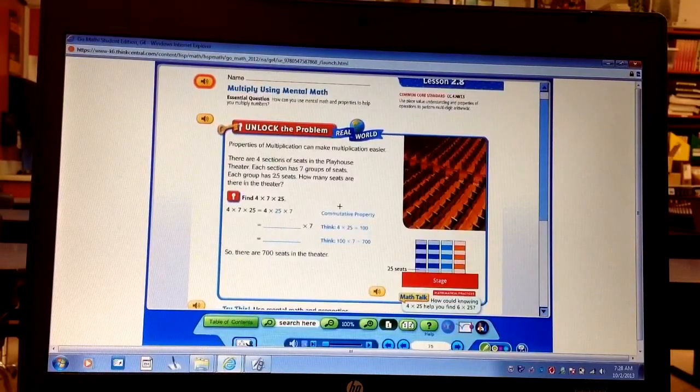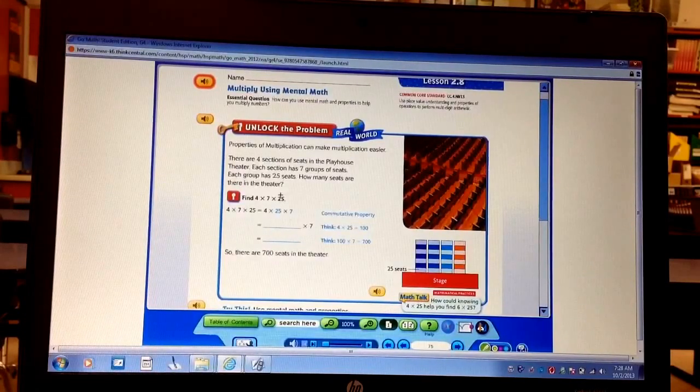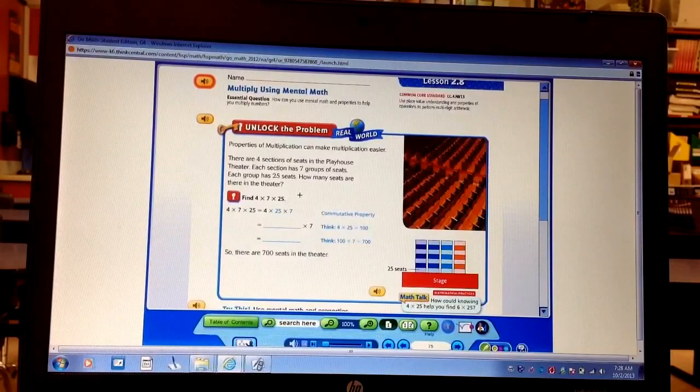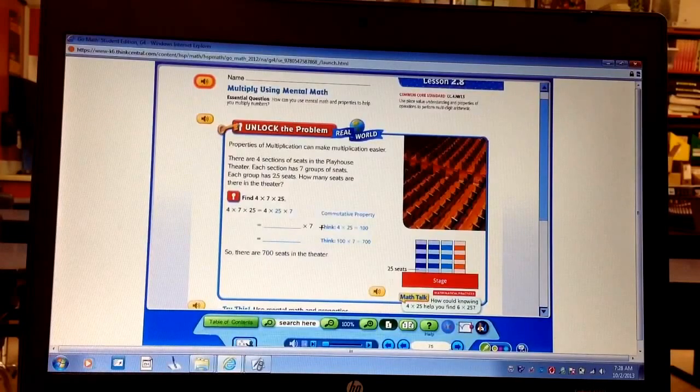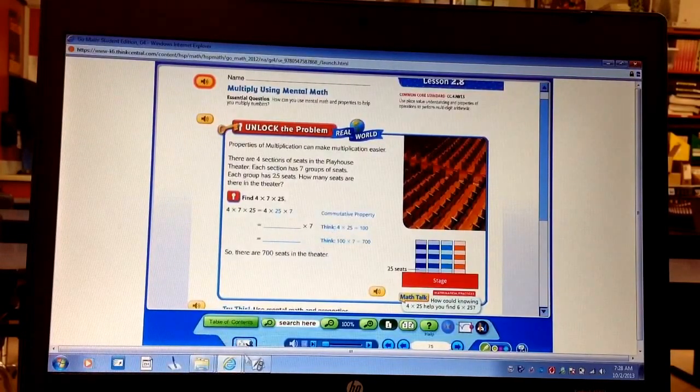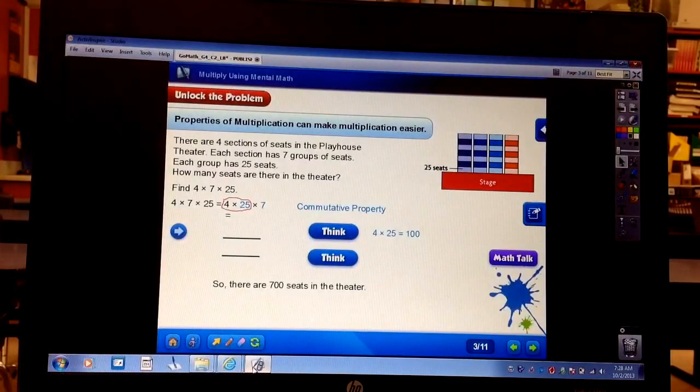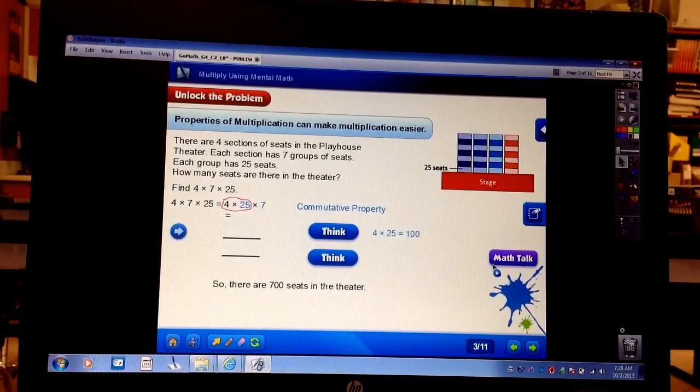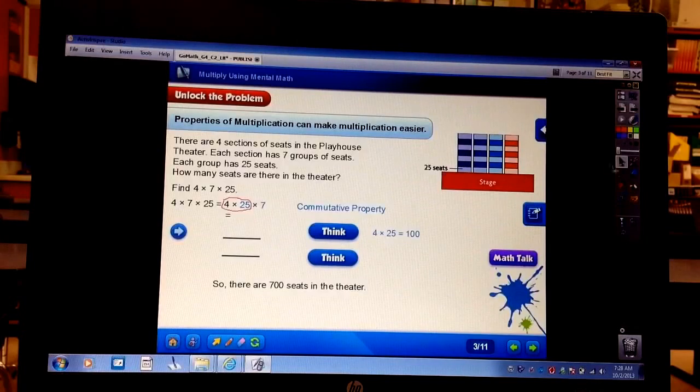Now I know a lot of you want to do 4 times 7 because that's an easy fact. But if we have 25 and 4 here, think of your quarters. 25, 50, 75, 100. That's 4. Or think 4 times 25 equals 100. Alright, I'm going to go back to the flip chart. Same thing. Here's your stage. 4 times 25 equals 100.